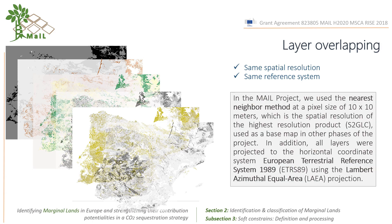In the main project, we used the nearest neighbor method with a pixel size of 3.10 meters, which is the spatial resolution of the highest resolution product, Sentinel-2, used as a base map in other phases of the project. In addition, all layers were projected to the horizontal coordinate system ETRS-89 using the Lambert Azimuthal Equal Area projection.